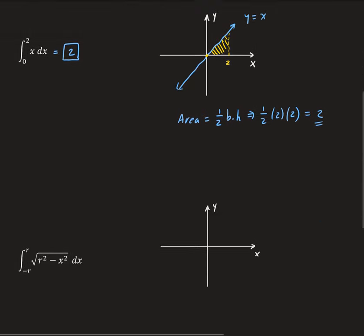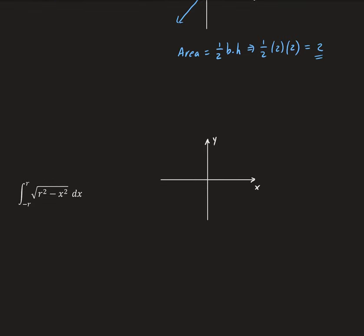The next one is the integral of the square root of r squared minus x squared, going between negative r and r. If we let y equal the square root of r squared minus x squared, then squaring both sides gives y squared equals r squared minus x squared, which means x squared plus y squared equals r squared. This is the equation of a circle.